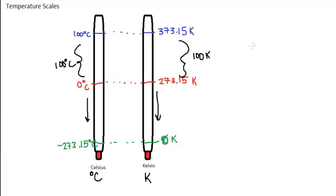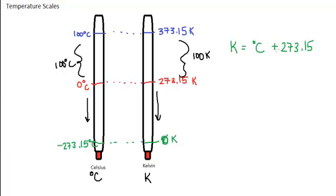So we see a pattern here, and to convert between the two is actually very simple. If you want the temperature in Kelvin, you simply take the Celsius value and add 273.15. If you have the Celsius value and need to convert it to Kelvin, you add 273.15. If you have the Kelvin value and want to convert it to Celsius, you subtract 273.15.